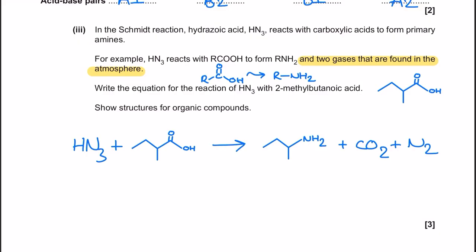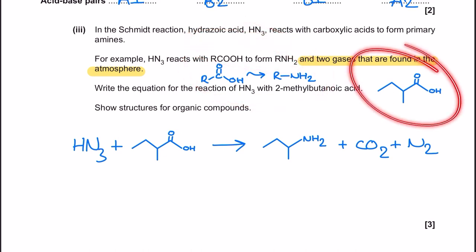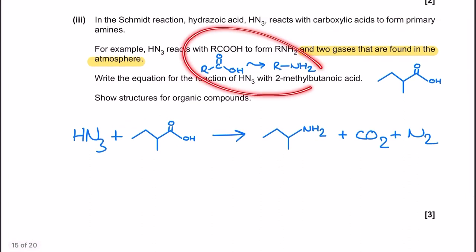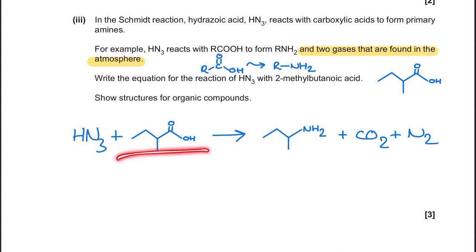Next up, there's some application with the Schmitt reaction — never heard of in your A-level. They describe a functional group change and give a description, so I'd write this out and also draw any molecules they name but don't show, as it lets you visualise when putting the answer together. They give two gases found in the atmosphere as products, so think about common atmospheric gases to avoid suggesting something random. The trick lies in looking at the functional group change and drawing out 2-methylbutanoic acid before having a go. As long as you're good with drawing structures and supporting your answer with diagrams, this isn't too bad.